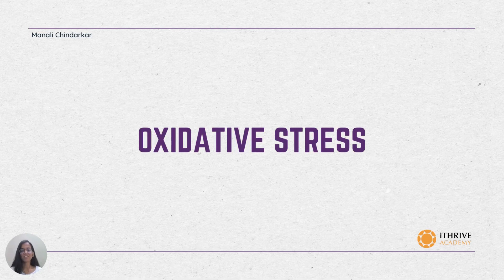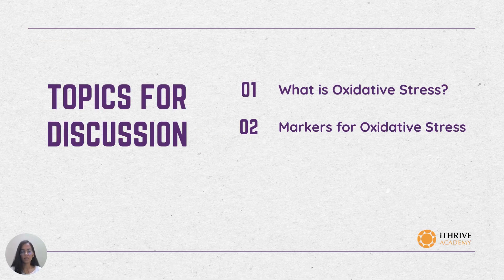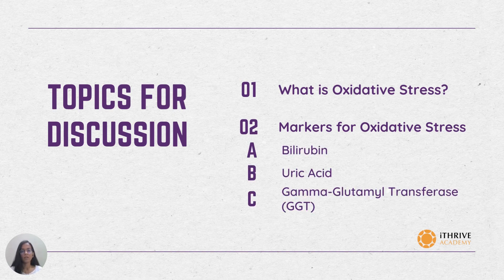Hello, I am Manali Chindarkar from iThrive and in this video we are going to uncover oxidative stress. Herein we will understand what is oxidative stress and identify the markers for the same. These include bilirubin, uric acid and gamma glutamyl transferase abbreviated as GGT.